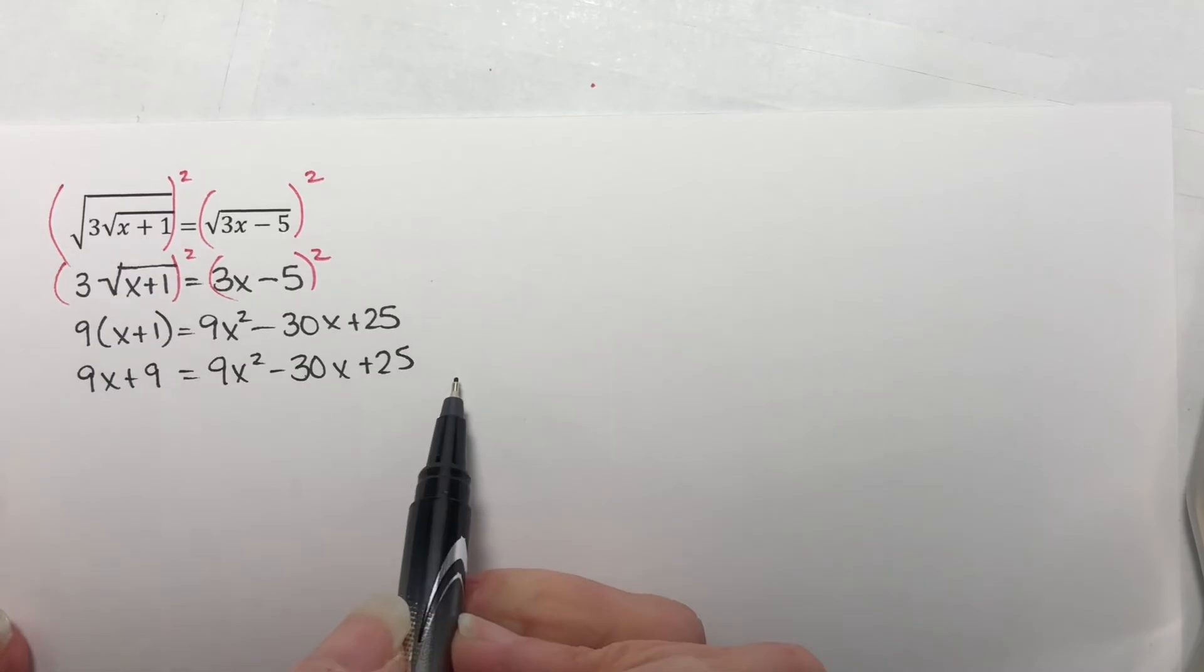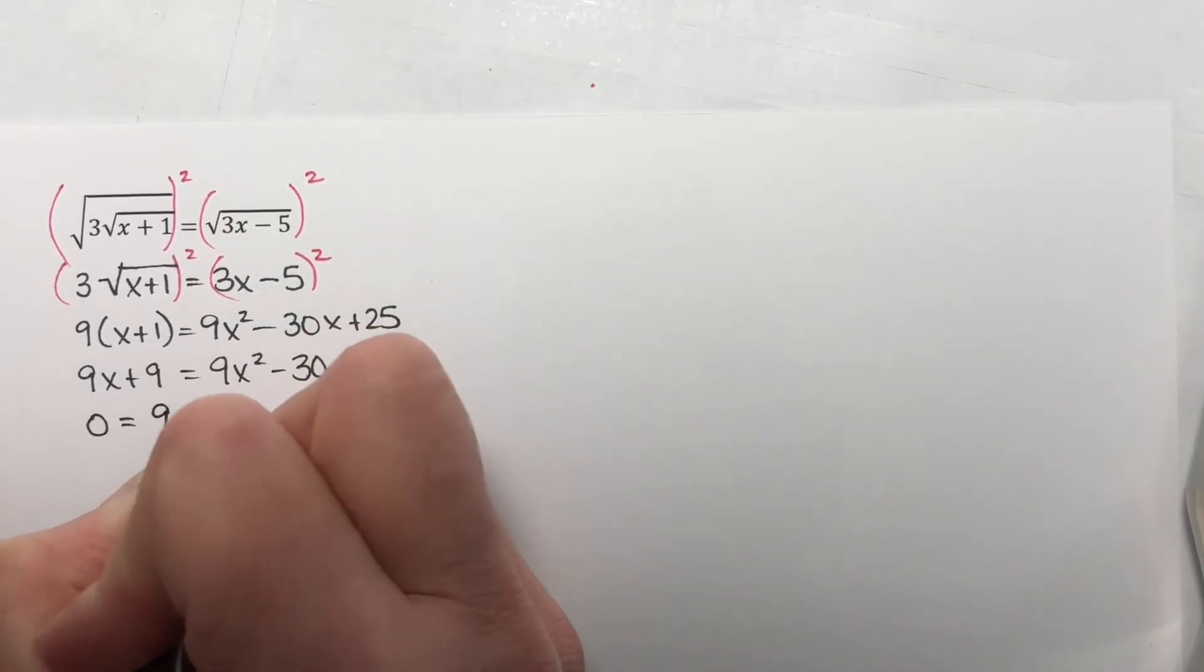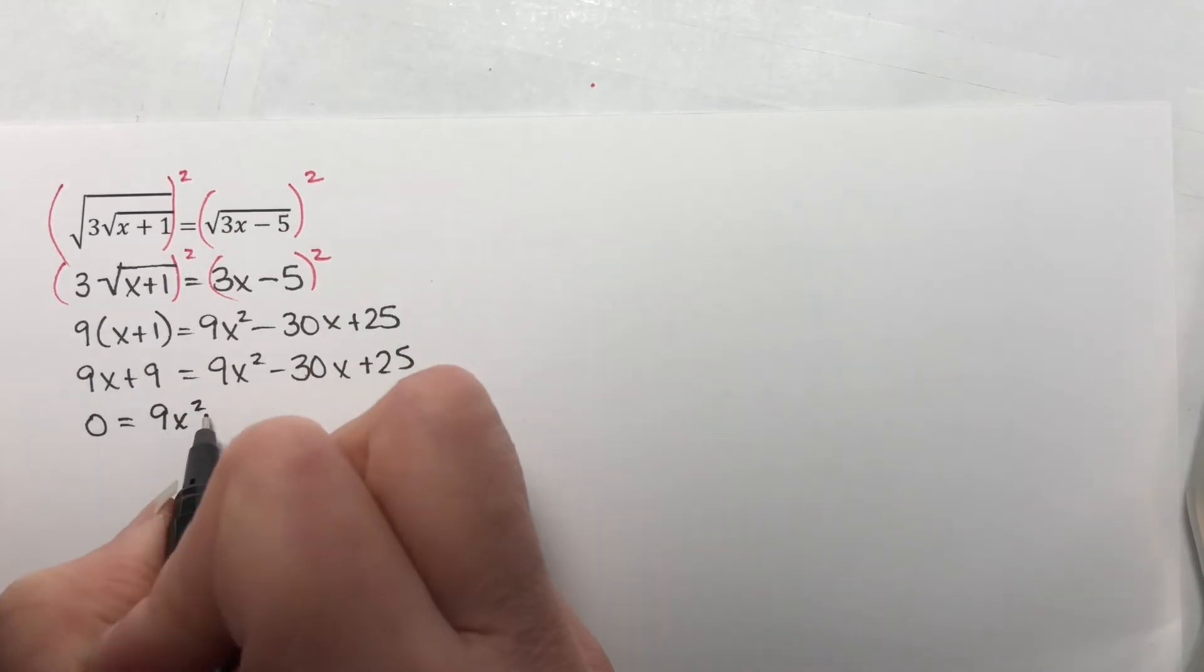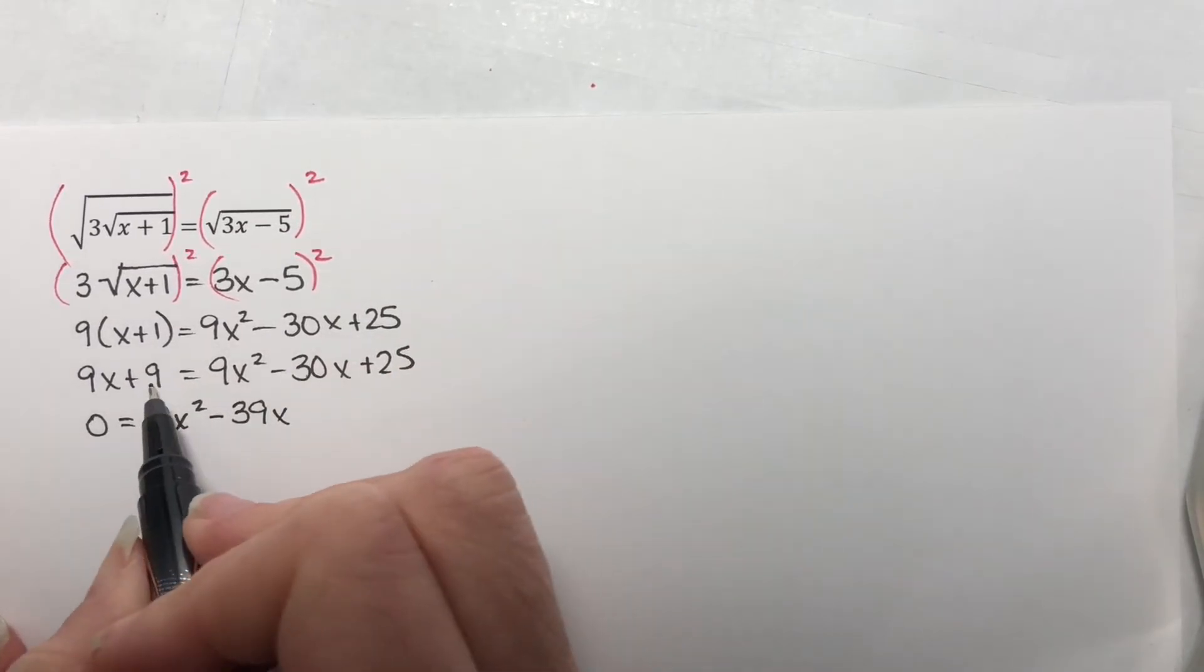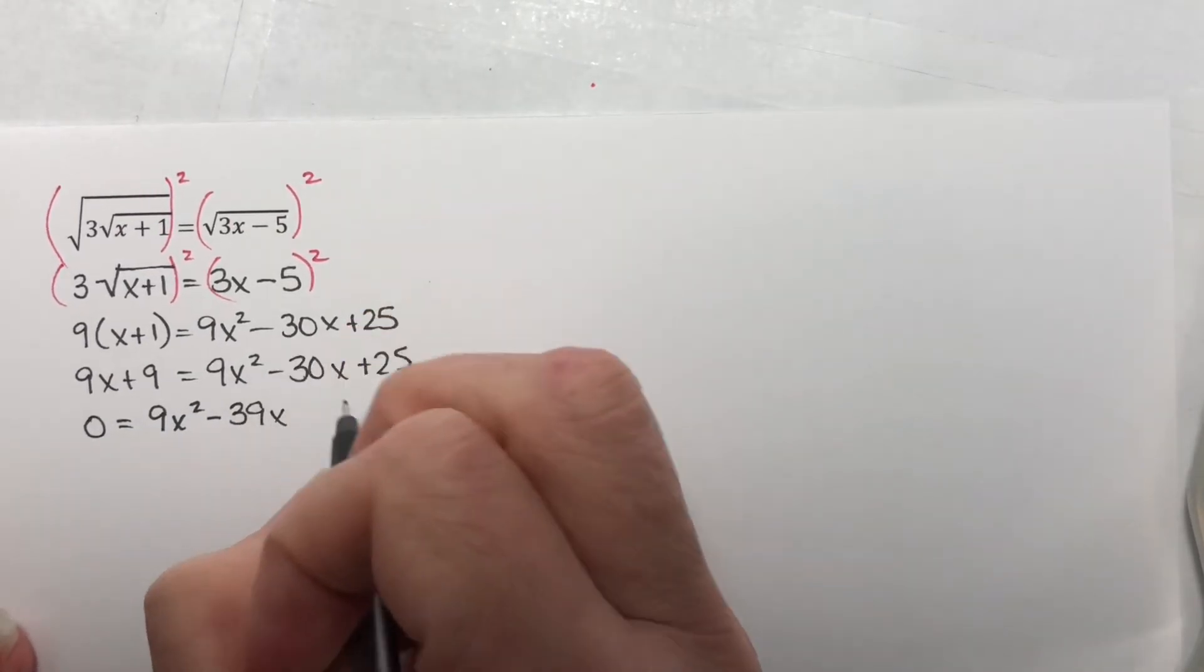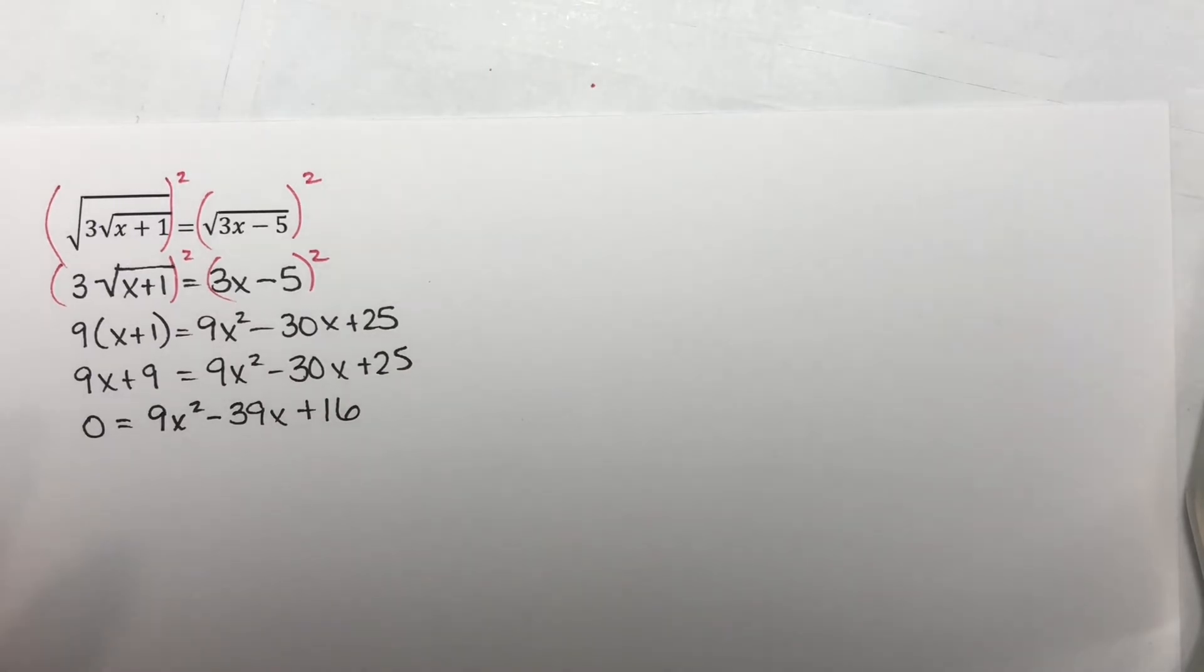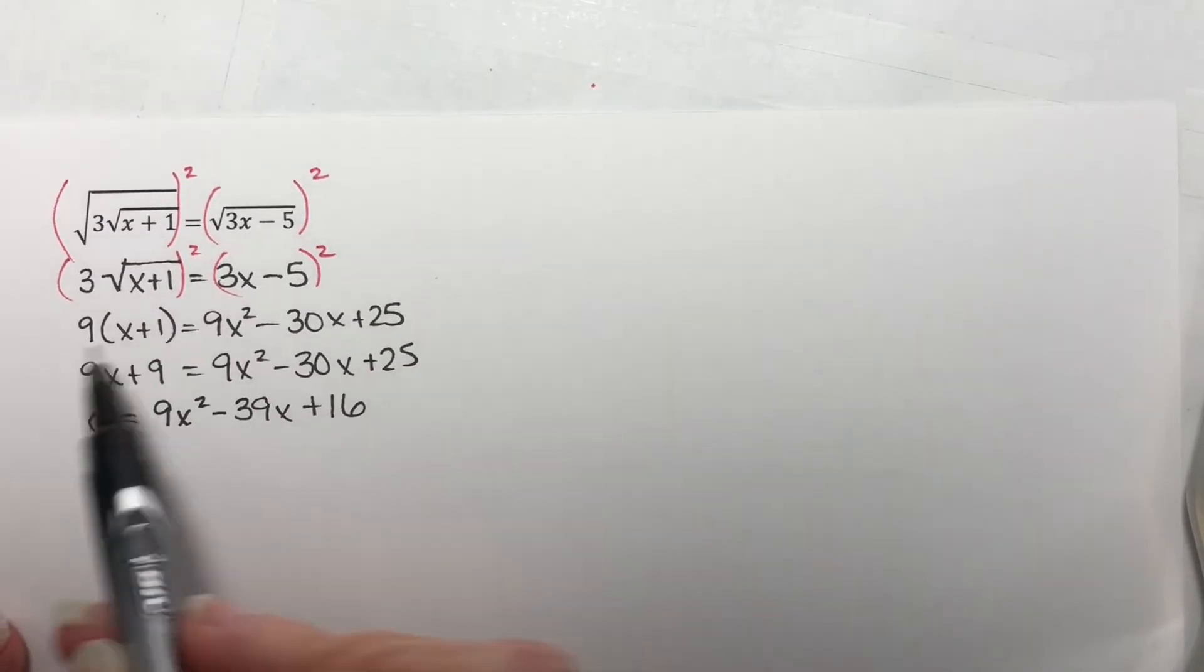Now move these over to this side so that we have our 0. So I have 9x squared. If I subtract 9x, I have minus 39x. Subtract the 9, and you get 16. Now you could work to see if this factors, but it won't.